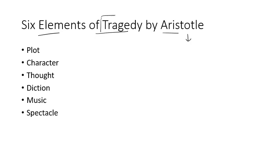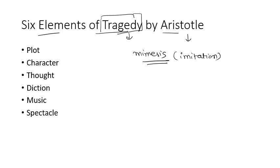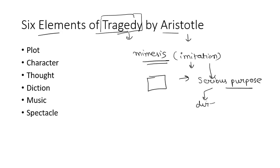According to Aristotle, tragedy is a kind of mimesis. I have already talked about mimesis in some previous videos, so you can check those out. Mimesis means imitation. Aristotle says tragedy is an imitation of a particular act which serves a serious purpose, and this purpose is served through direct action rather than through narrative.